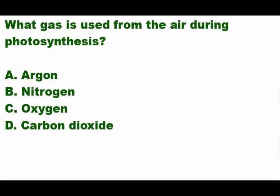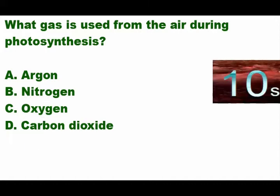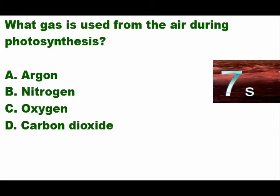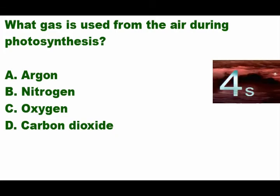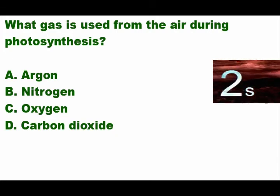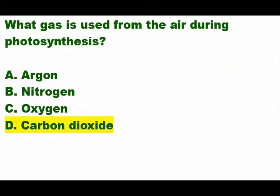Next question: what gas is used from the air during photosynthesis? Is it A) argon, B) nitrogen, C) oxygen, or D) carbon dioxide? The answer is letter D — carbon dioxide.